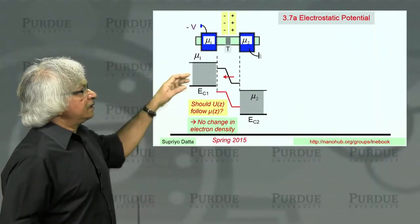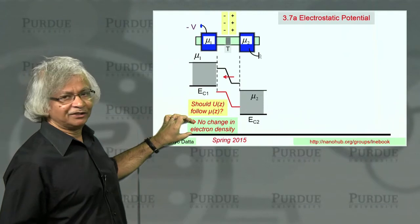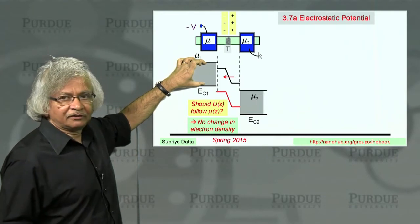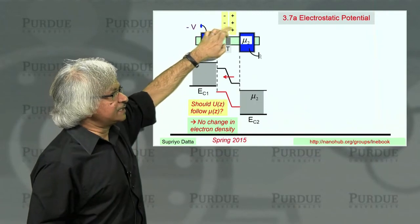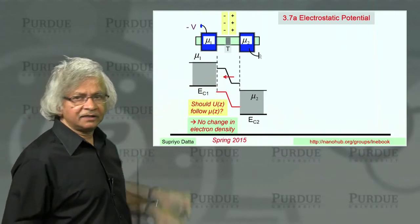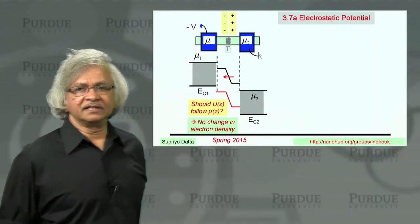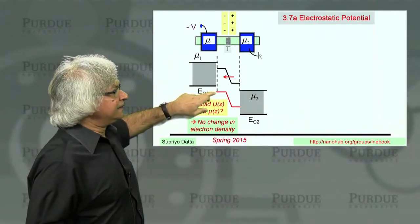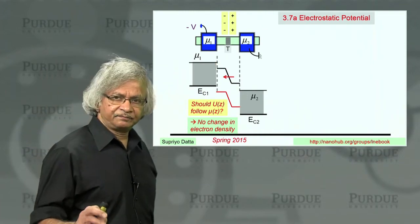But if u and mu were to follow each other exactly, there would not be any change in electron density. This distance is a measure of the electron density, and in order to accommodate extra electrons or a deficit of electrons, this curve cannot quite follow that — it has to be a little different. On the other hand, if this medium is very conductive, meaning the density of states is very high, then the electrostatic potential will approximately follow the electrochemical potential.